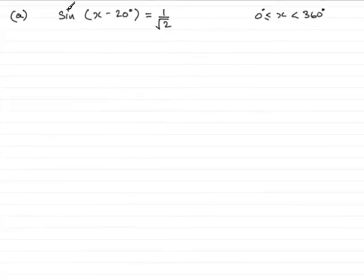Now in this question we're asked to solve sine of the angle x minus 20 degrees equals 1 over root 2, where x is greater than or equal to 0 degrees but less than 360 degrees.